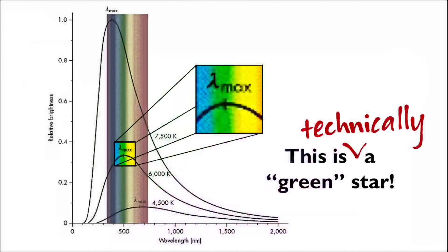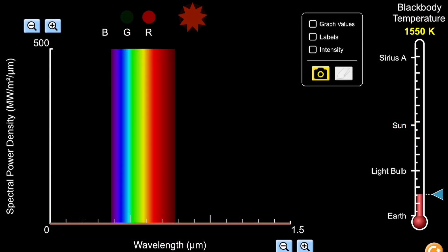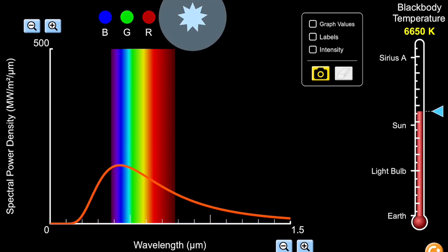But we'll never actually see them. In order for us to see a green star, we need to see only the green light. But this is physically impossible for a blackbody, since the blackbody curve increases in intensity across all wavelengths if the peak wavelength decreases.